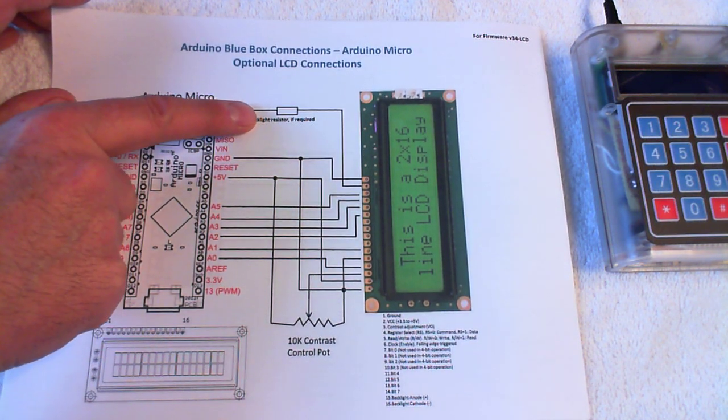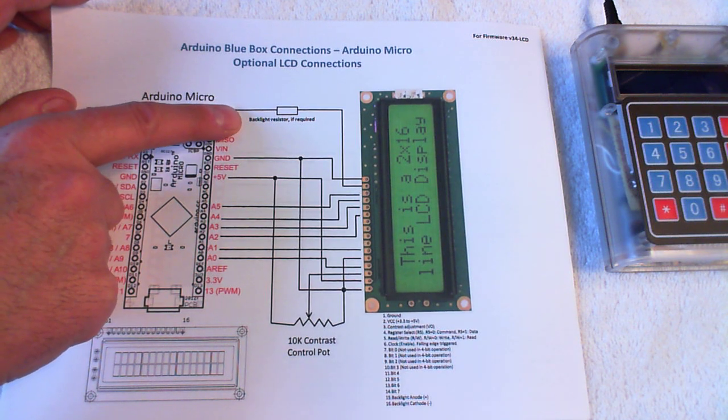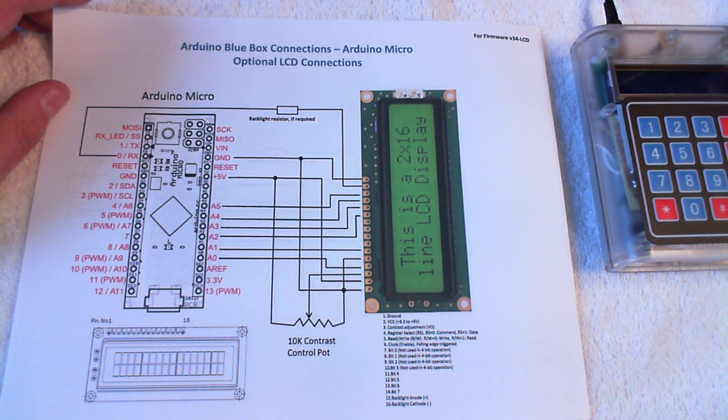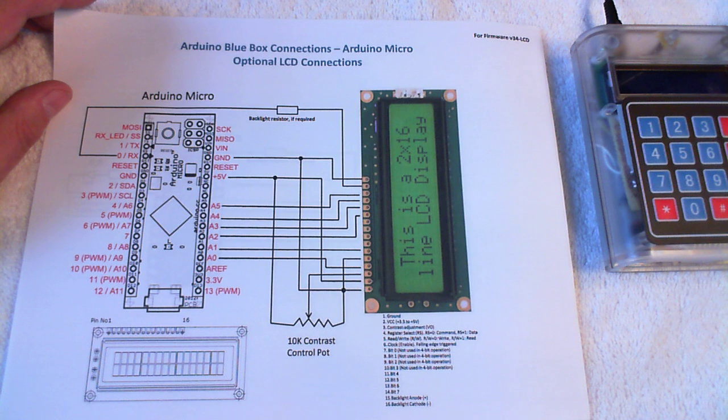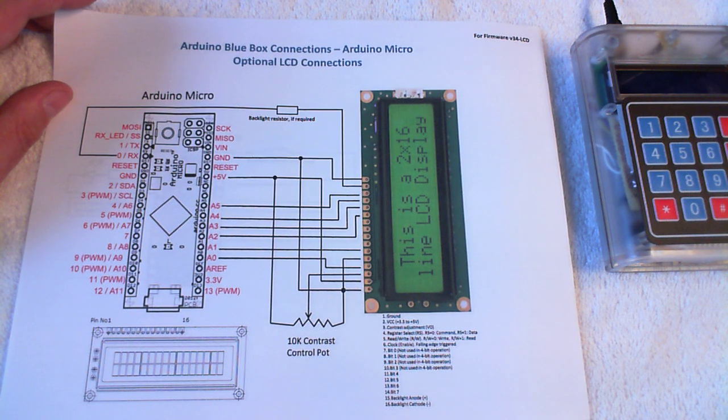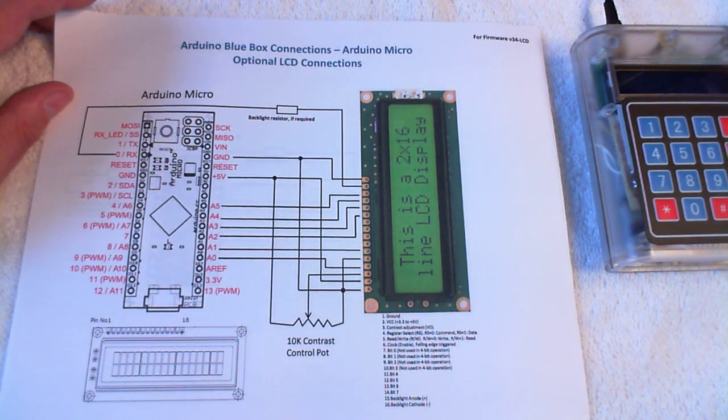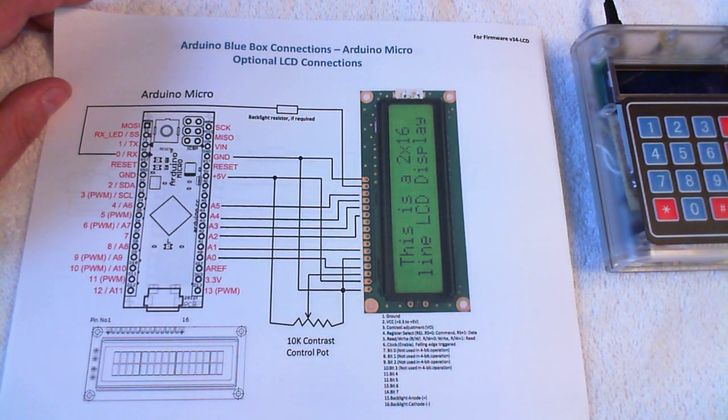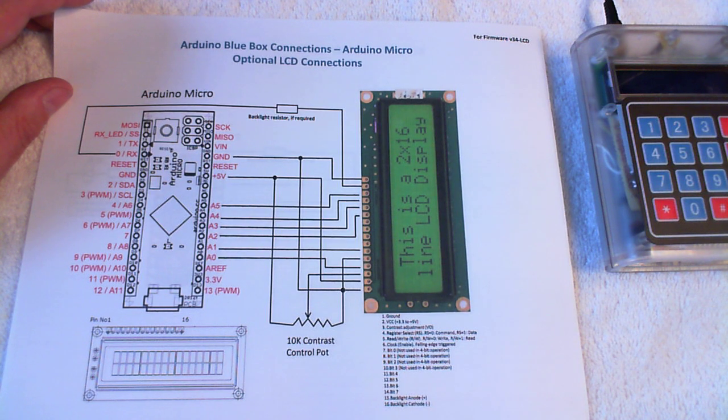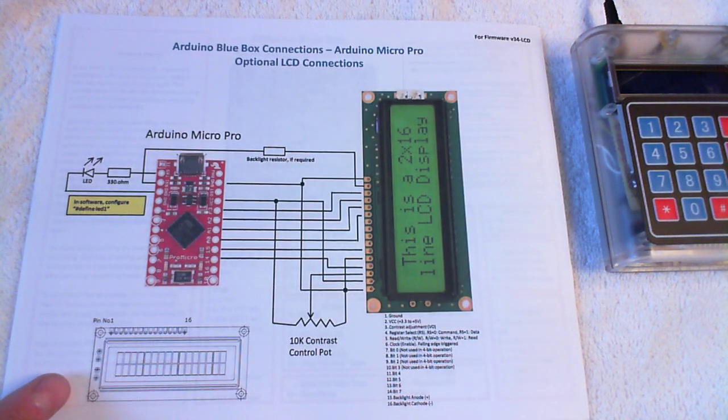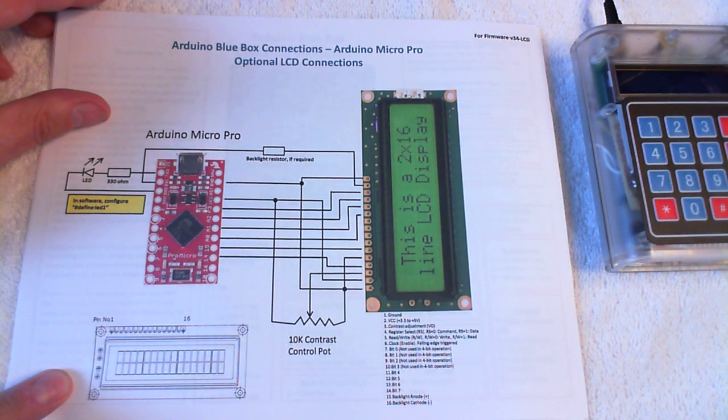Now some backlights on some LCD modules require a backlight resistor, so you want to check this out very carefully. If you need one and don't use it, it's going to draw a huge amount of current out of the Arduino and could potentially damage it. The ones I used, I took a meter and traced it out, and it turns out they have a 100-ohm resistor on the board, so I did not need it, but you may. So if necessary, you want to be sure to use that. This is for the micro, and here's the corresponding output pins for the pro micro.